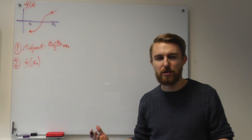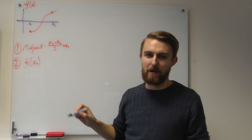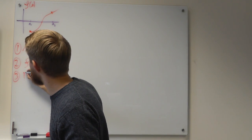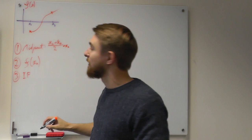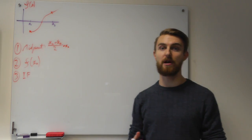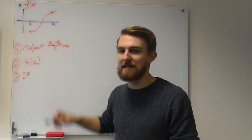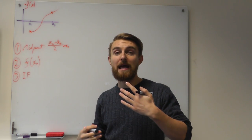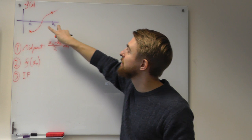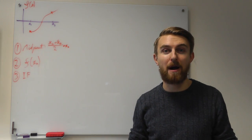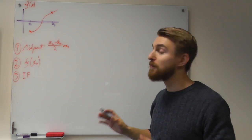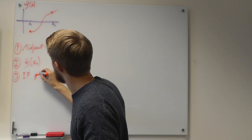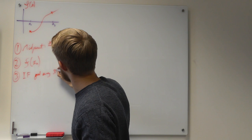The second step once we've found that midpoint is to evaluate f of xn. What is the value of our function at our new bisected point? The third step is if this new approximation is good enough, i.e. if f of xn is very very small, very very close to zero, or if the new range we've got is sufficiently narrow for our application, then we'll stop.